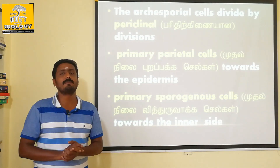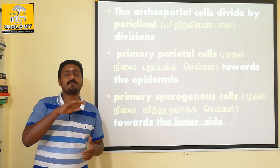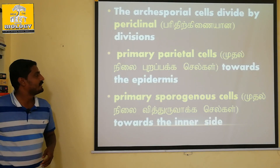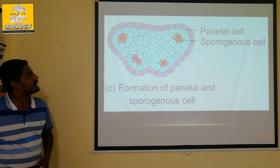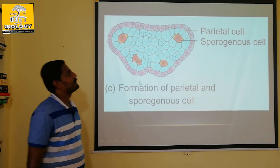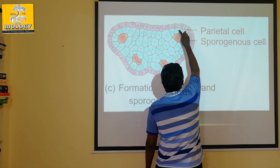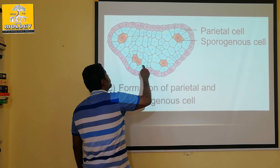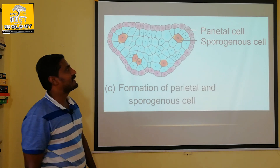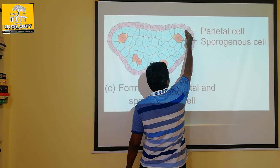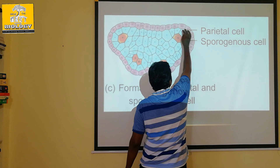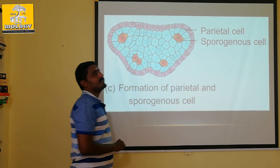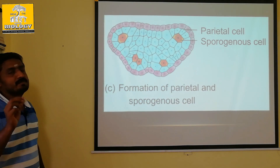The periclinal division divides horizontally. Due to this division, primary parietal cells and primary sporogenous cells are formed. In the inner region, the sporogenous tissue is produced.